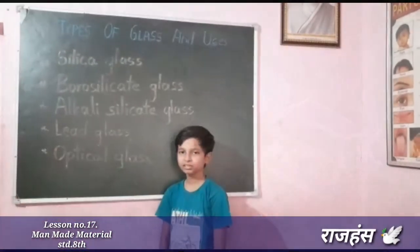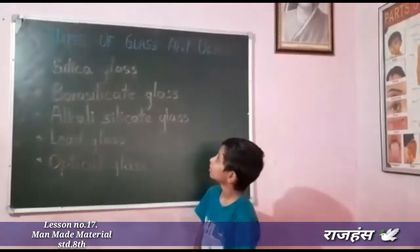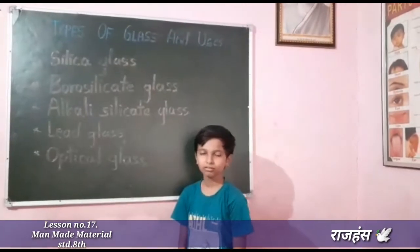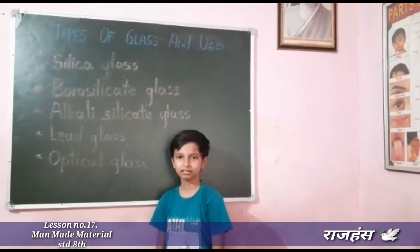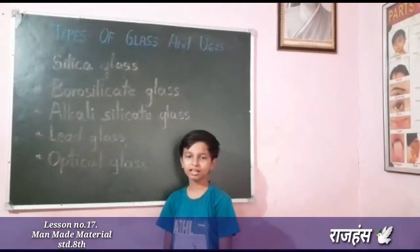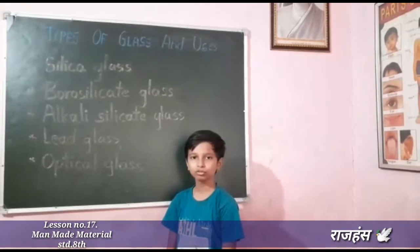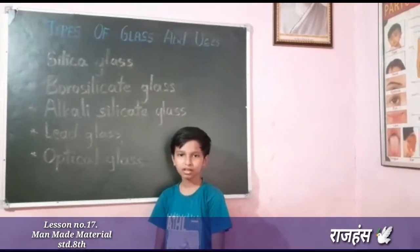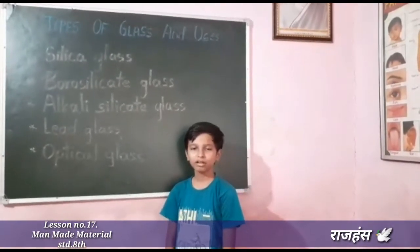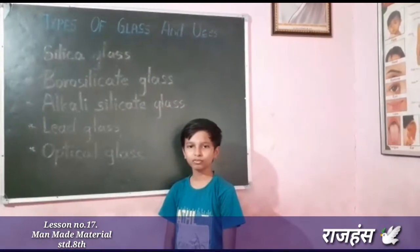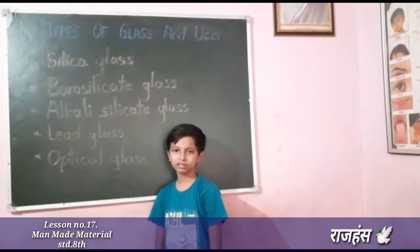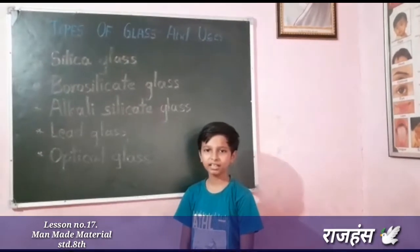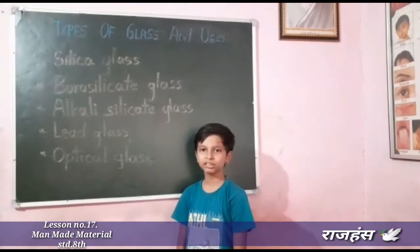Our topic is types of glass and their uses. First, silicate glass. Silicate glass is produced from silica. It is made to withstand maximum expansion of heat. It cannot be affected by acid and alkaline. It is used in laboratories.